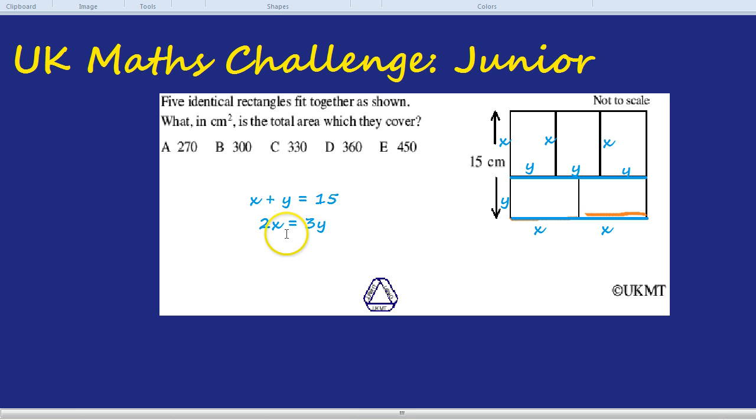What I would do is maybe get X on its own down here. At the moment we know what two X is, but let's half both sides. Half of three is just three over two, or 1.5 if you prefer. So 1.5Y. So if two X is three Y, then a single X is 1.5Y. I just divide both sides by two.